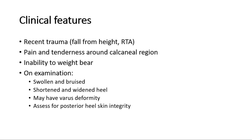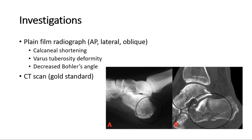It is also important to assess for posterior heel skin integrity. For investigations, do a plain film radiograph of three views: AP view, lateral view, and oblique view. Expected findings are calcaneal shortening, varus tuberosity deformity, and decreased Buller's angle.